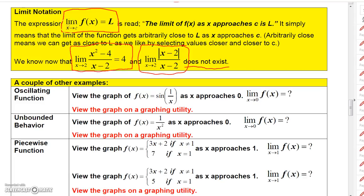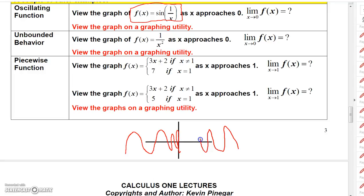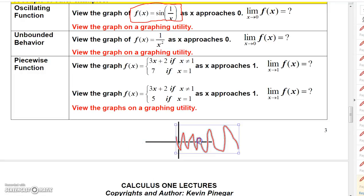There are some other functions where limits may or may not exist. For this function, let's talk about what happens as x approaches 0. As you start out to the left of 0 and get closer and closer to 0, you'll see it oscillate — and as you get real close to 0, it starts to oscillate real fast, going up and down between 1 and negative 1. The same thing happens from the right side. So this function never approaches a number as x approaches 0, and we would say that this limit does not exist.